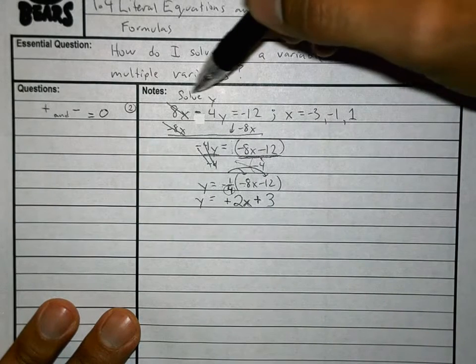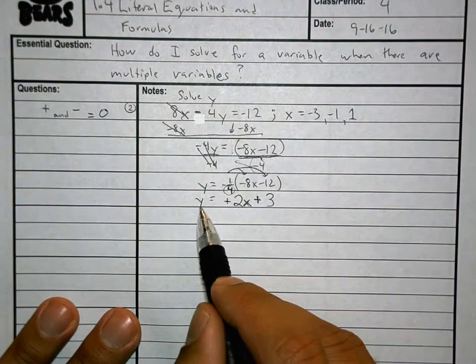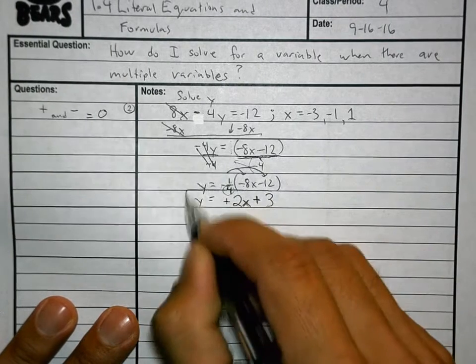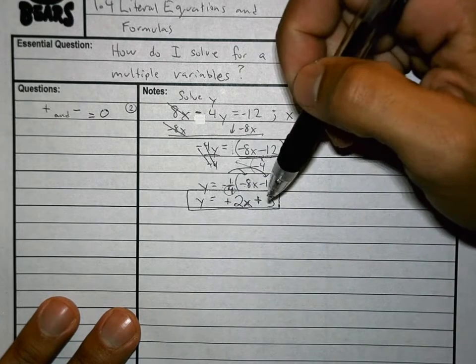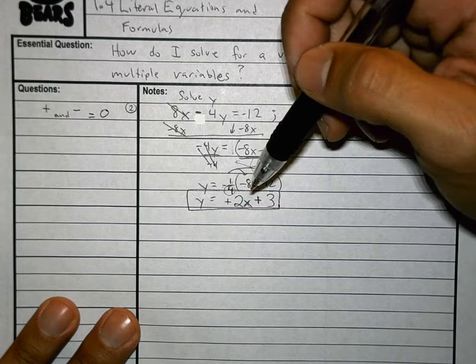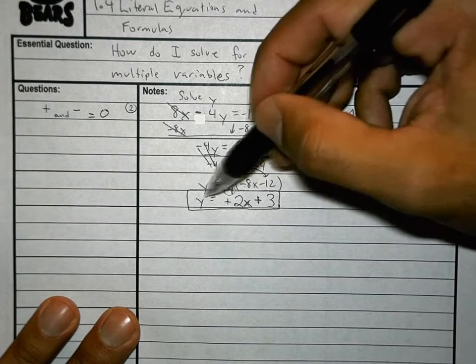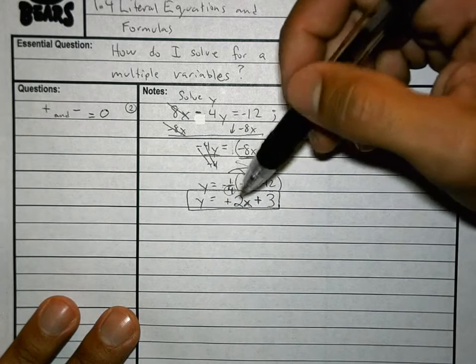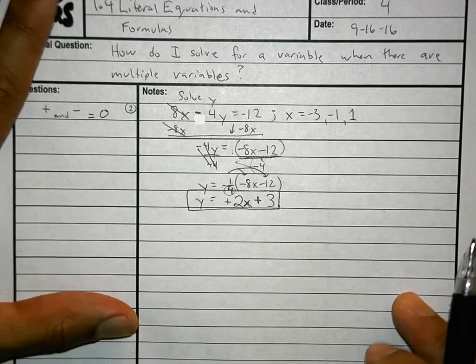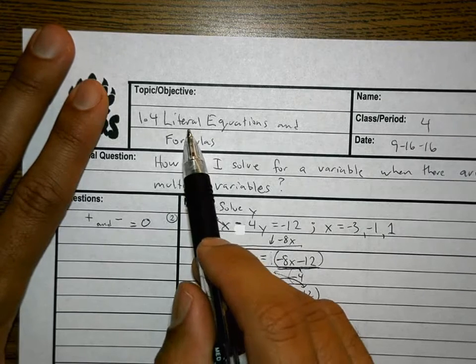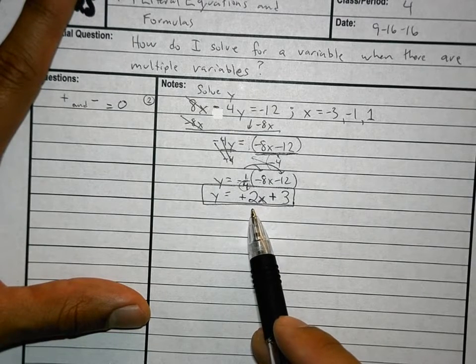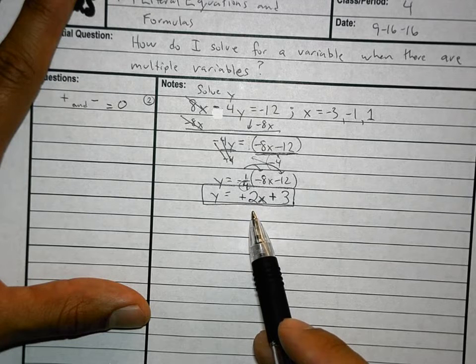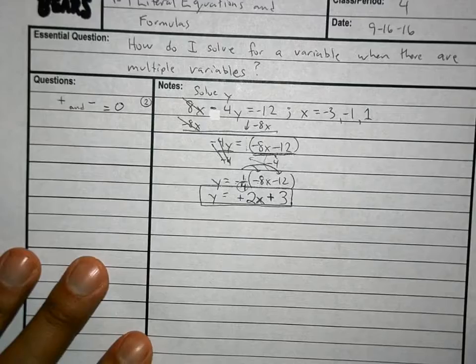The question asked us to solve for y. Did we solve for y? Is the y by itself? Then this is our answer for the first part: y equals 2x plus 3. The y is by itself. That's important because our answer isn't made up just of numbers — it has numbers and variables. That's what a literal equation is. We are solving for a variable when there are other variables. Sometimes our answer is going to have a variable in it.